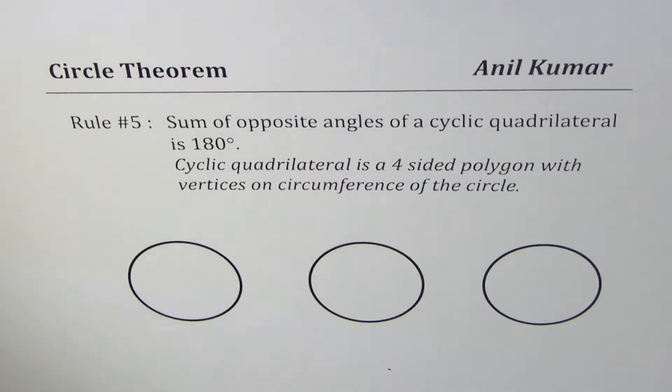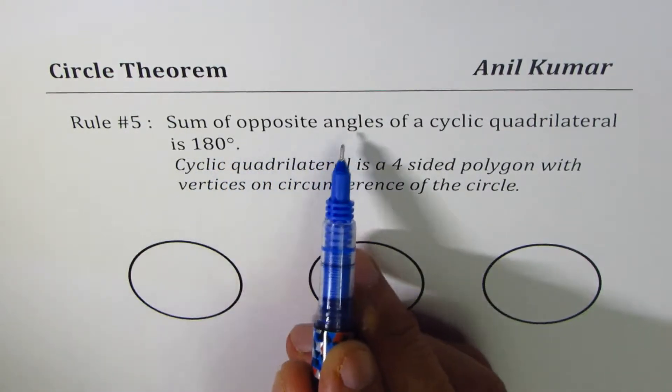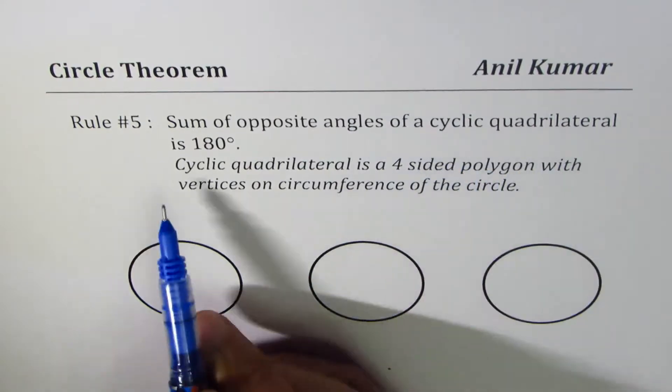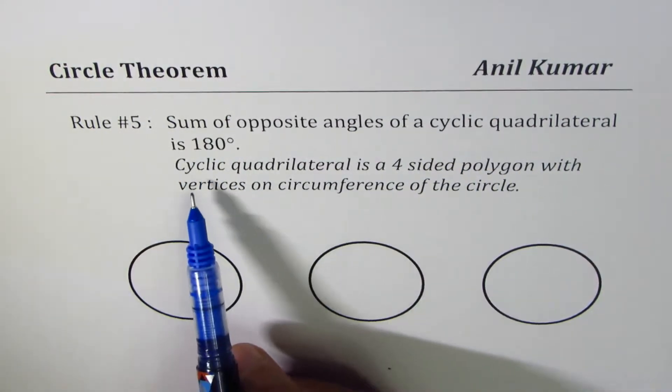I'm Anil Kumar, and in this video we will learn a rule which is going to help us solve questions for quadrilaterals inscribed in a circle. The rule is: sum of opposite angles of a cyclic quadrilateral is 180 degrees.